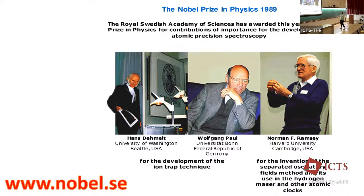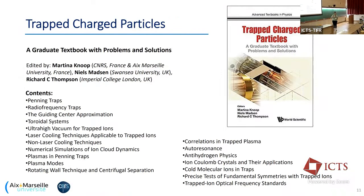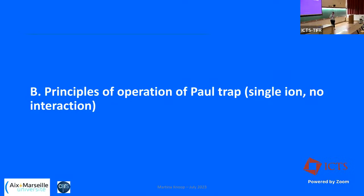The other half of the 1989 Nobel Prize was for Norman Ramsey, for his method of oscillating separated fields, which you all know about. The ion trap has even made it into a museum — there is a Paul trap on display at the German Museum in Bonn, as part of an exhibit on ion trapping.